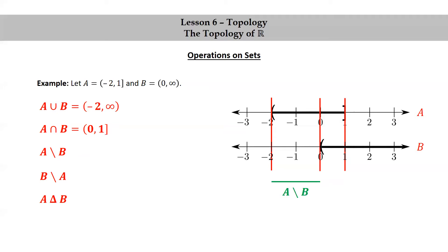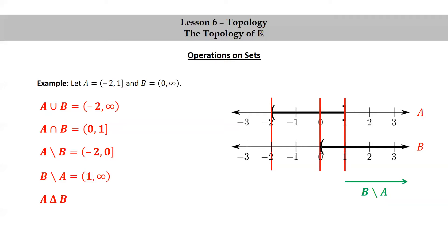A minus B can be found between the first two vertical lines, and that's the half-open interval from negative 2 to 0, not including negative 2, but including 0. B minus A can be found to the right of the last vertical line, and that's the infinite open interval 1 to infinity.